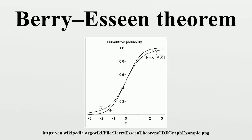Under stronger assumptions, the Berry-Esseen theorem, or Berry-Esseen inequality, gives a more quantitative result, because it also specifies the rate at which this convergence takes place by giving a bound on the maximal error of approximation between the normal distribution and the true distribution of the scaled sample mean. The approximation is measured by the Kolmogorov-Smirnov distance.